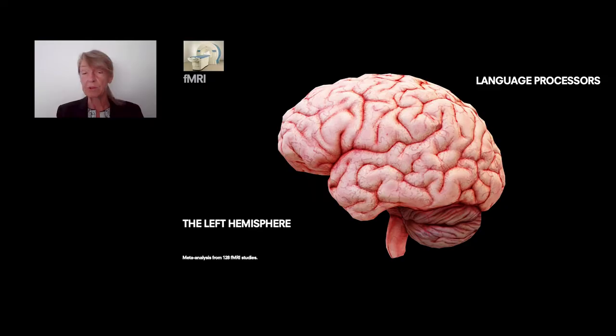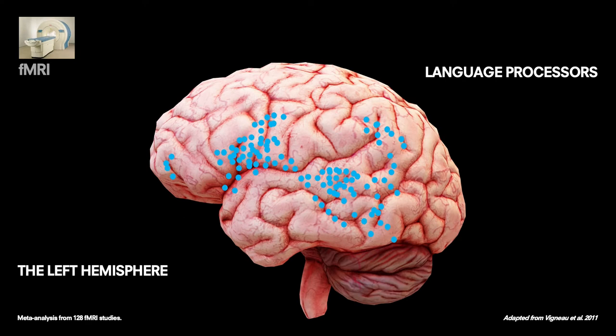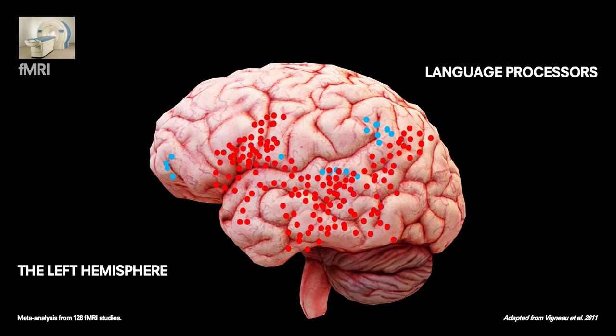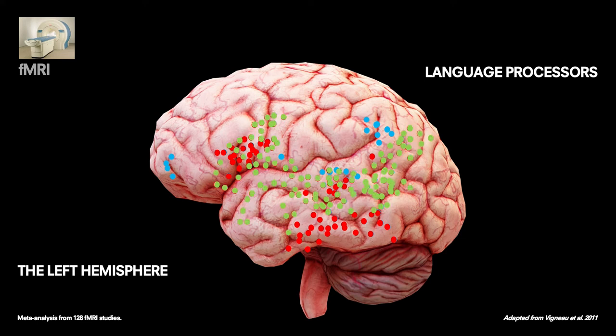So, where are the language processes? In the left hemisphere. This is a real anatomical image of the brain, of the left hemisphere in particular. And in this part of our brain resides the language with specific activation, as you can see from this meta-analysis, which included more than 100 studies with functional MRI, and the precise activation related to the language subcomponents.